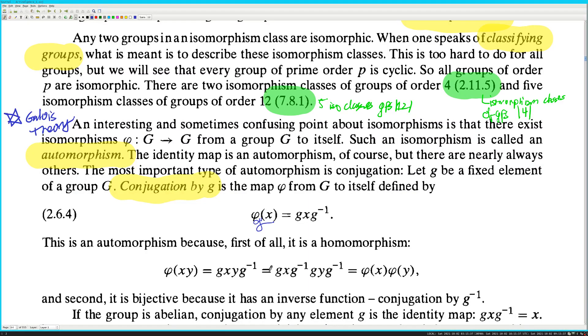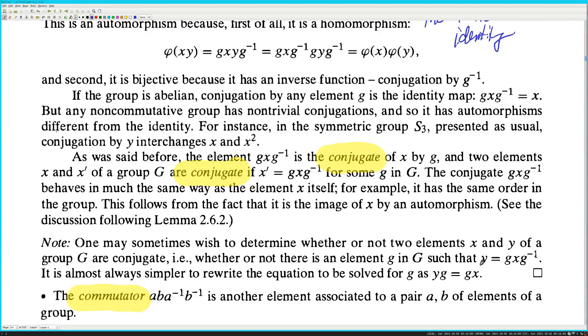The identity map is an automorphism, of course, but there are nearly always others. The most important type of automorphism is conjugation. Let G be a fixed element of a group G. The conjugation is a map, phi from G to itself, defined by phi of X is equal to phi sub G, G of X is GX G inverse. This is an automorphism because, first of all, it is a homomorphism. Yes, because you can insert the identity. This is an important technique that comes up a lot in math. Insert the identity. And, second is bijective, because it has an inverse function, conjugation by G inverse.